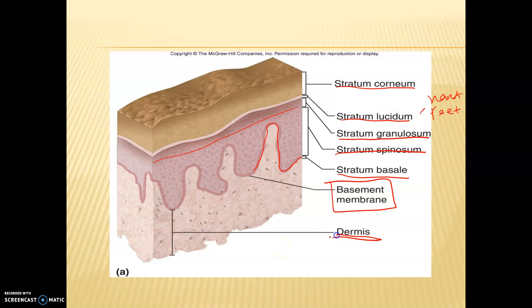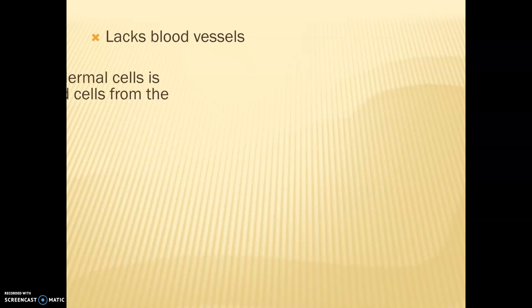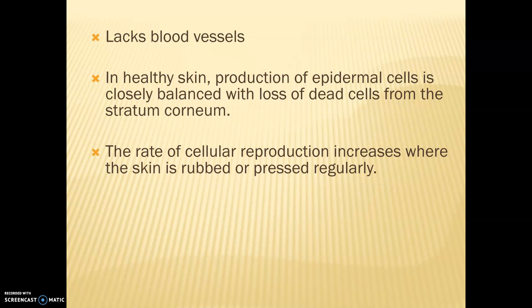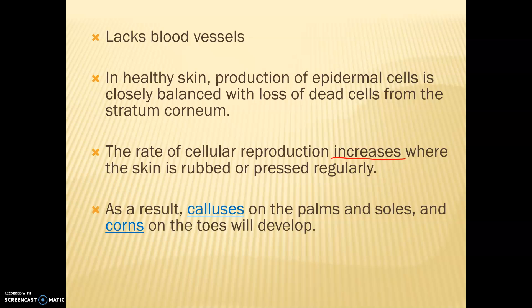Underneath all that you'll start seeing connective tissue in our dermis. Our epidermis lacks blood vessels. In healthy skin, the production of epidermal cells is balanced with the loss of cells in the stratum corneum — the more cells we lose, the faster we reproduce them. The rate of cellular reproduction increases where skin is rubbed or pressed more regularly, such as our hands and feet. The result is calluses on our palms — if you play guitar you might have calluses on your fingers — or corns on our feet, which are just harder, more protected layers of skin.